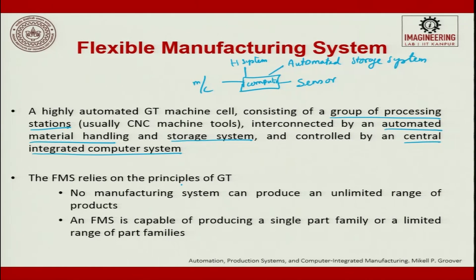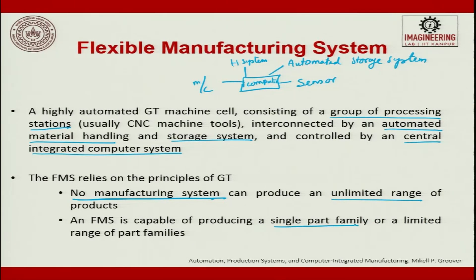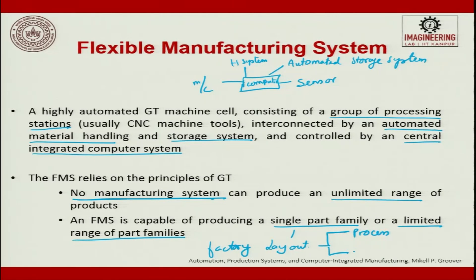The FMS relies on the principles of group technology. No manufacturing system can produce an unlimited range of products — the flexibility is within a spectrum. An FMS is capable of producing a single part family or a limited range of part families. These have a direct influence on layout — process layout or product layout — and from there we implement an FMS system.